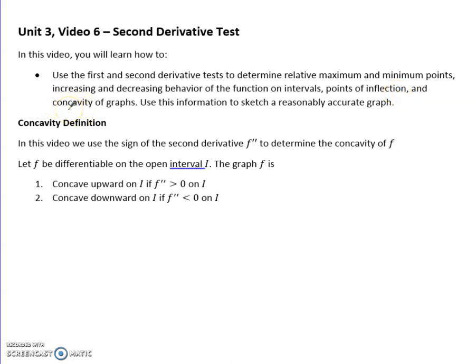So concavity, your graph can be curved in a way such that it's concave up, which is kind of like a bowl facing up, or concave down, like a bowl facing down. And it's a pretty easy relationship. It's concave up if your second derivative is positive, and it's concave down if the second derivative is negative for a particular interval.